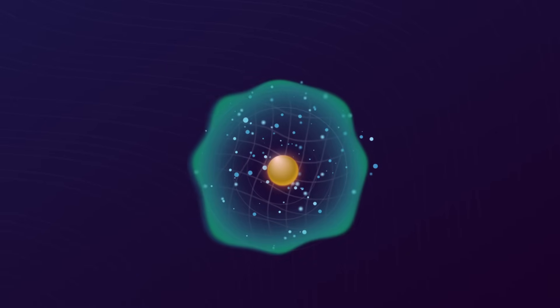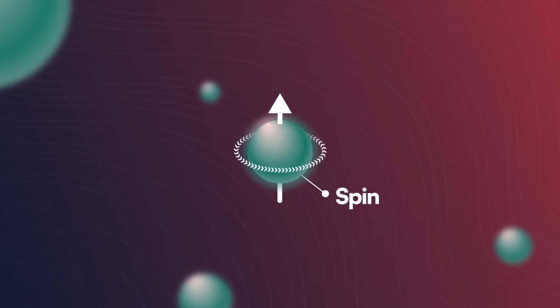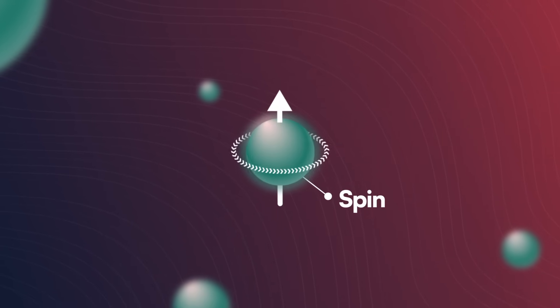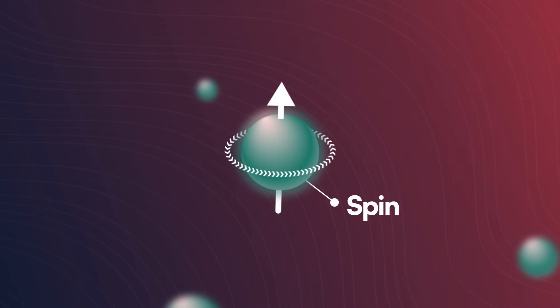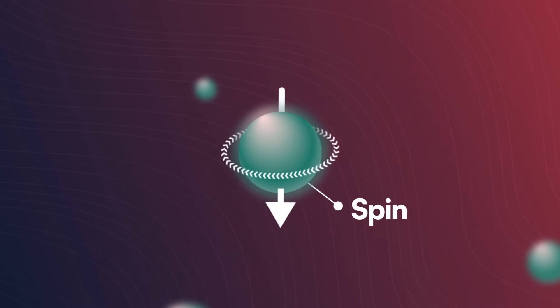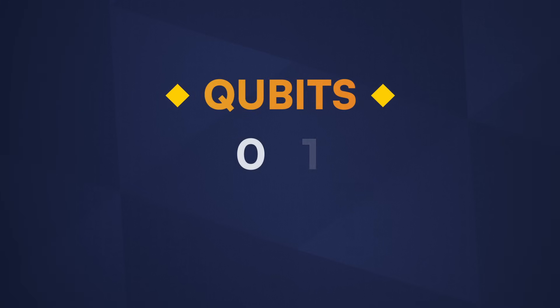A quantum particle is another way to physically encode a bit. For instance, an electron has a property called spin. It's analogous to the two scenarios for the wire — either it's spin up, analogous to zero, or it's spin down, analogous to one. Except that isn't quite true. Quantum particles can represent a zero or a one, or some combination of both of those values. That's called superposition. So instead of calling them bits, they call them qubits, or quantum bits.